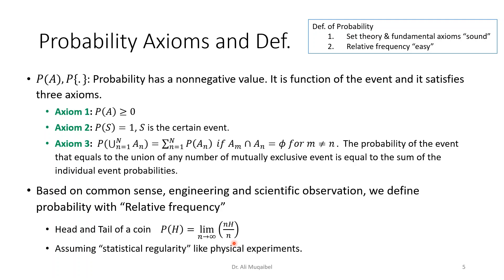Now we can say, based on our common sense, our engineering and scientific observation, that if you want to find the probability of an event, you can use relative frequency, which means you repeat the experiment many times. For example, if you have a coin, you toss the coin one thousand times, hundred thousand, one million, and you see how many of these are heads and how many of them are tails, and then you find the ratio between the number of heads over the total number of experiments.